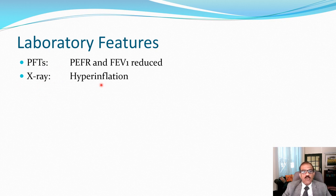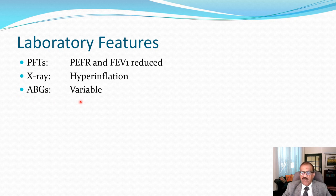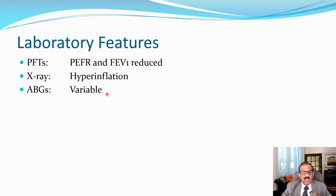Chest X-ray is not usually required for diagnosis but should be done to rule out complications such as atelectasis and pneumothorax, especially in severe cases. The X-ray may look normal or show some hyperinflation. Arterial blood gases are not done in every patient — we commonly use non-invasive pulse oximetry to monitor oxygen saturation — but in serious cases, especially status asthmaticus, arterial blood gases are done serially to assess prognosis.